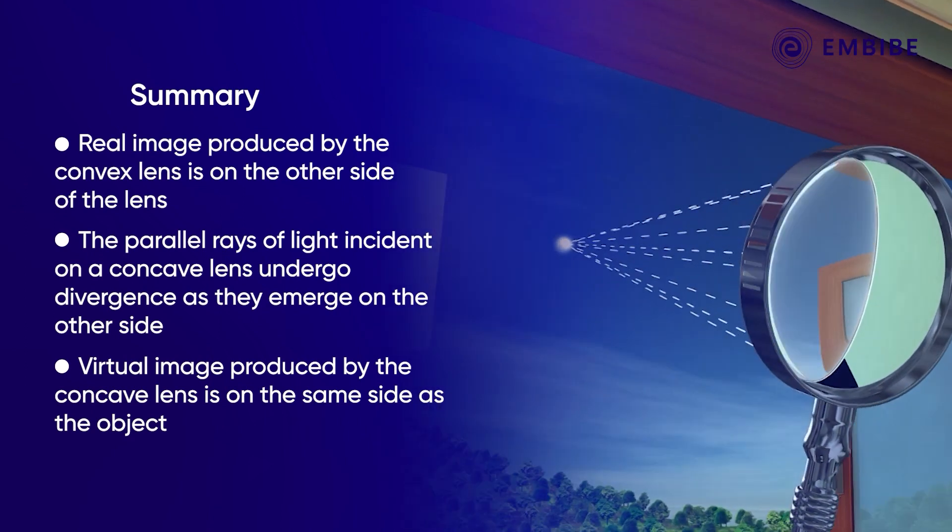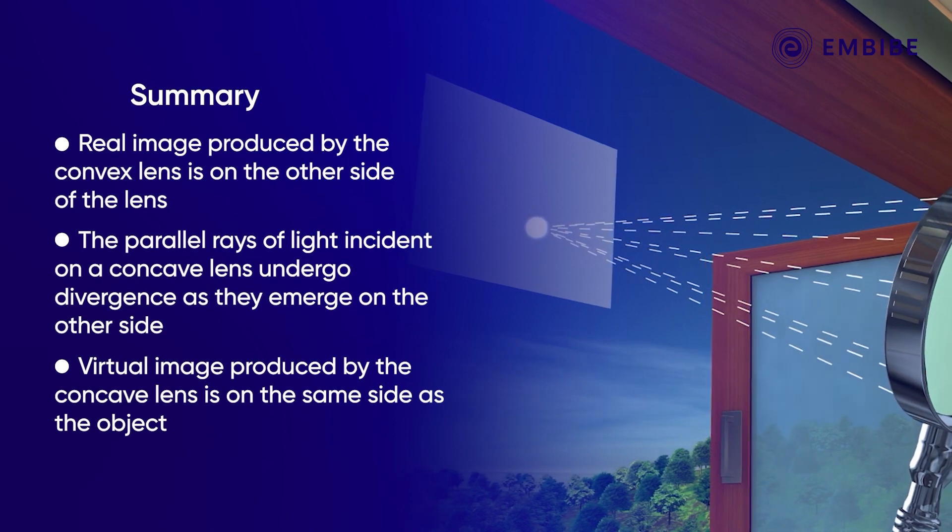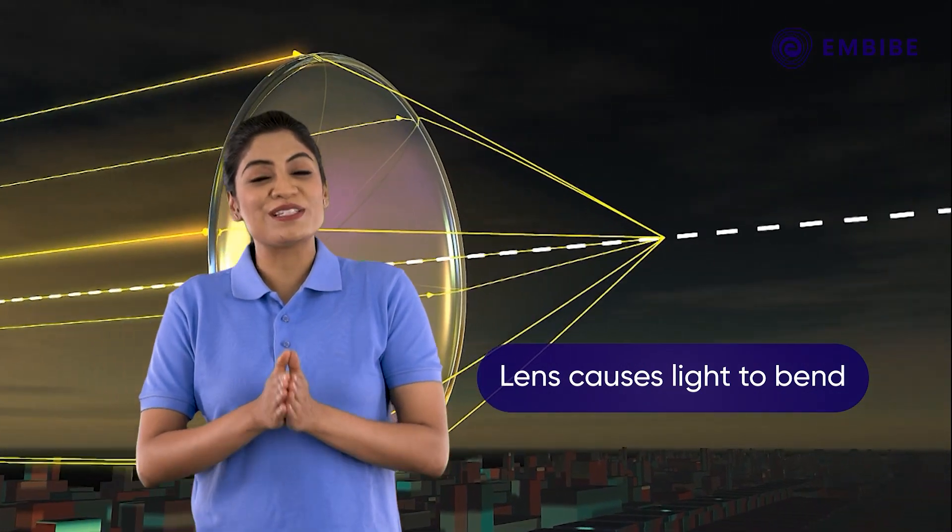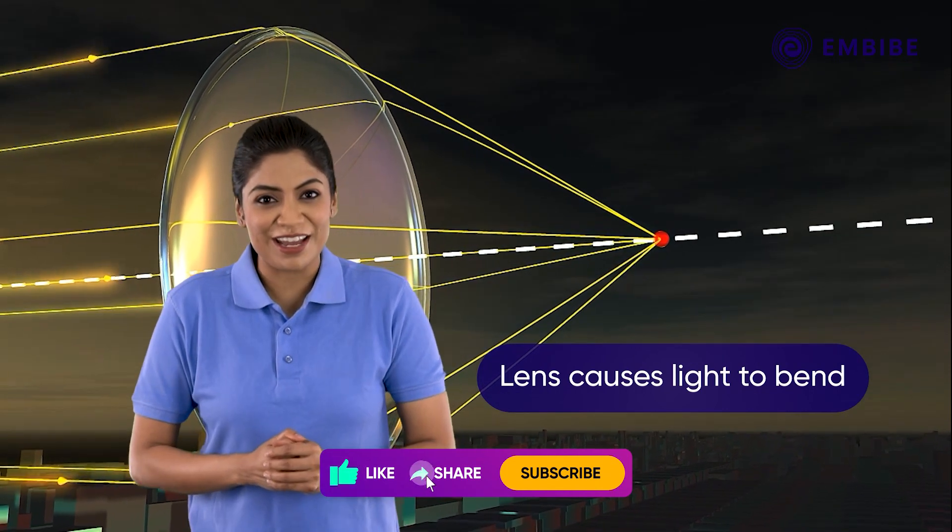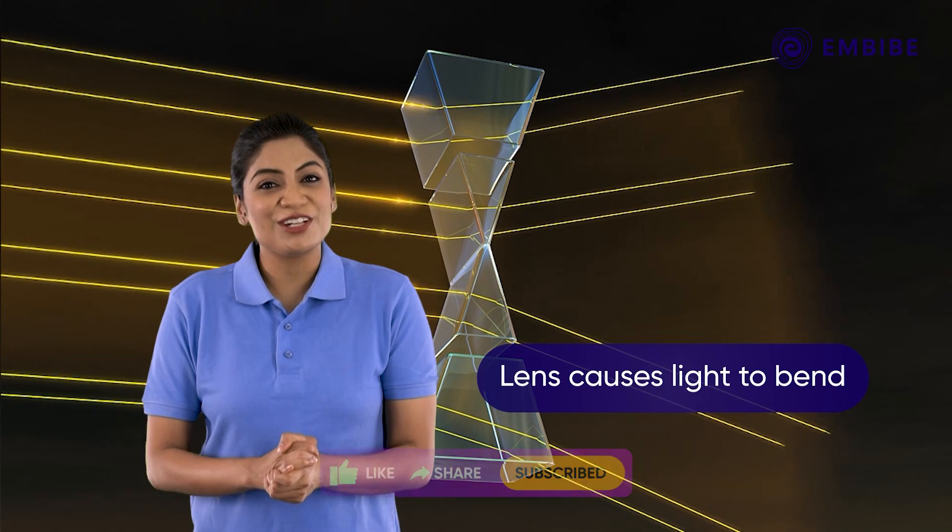that is, an image formed on the same side of the lens as the object. Now you know that a lens will cause light to bend and how lenses affect light by converging or diverging the rays that travel through.